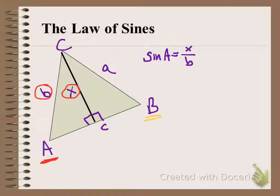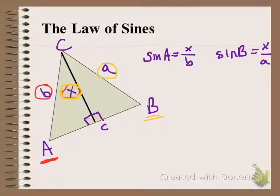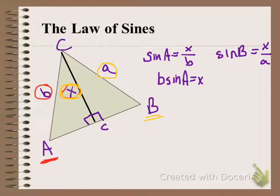Now let's go to the other angle. The sine of B is equal to X over A. Because X wasn't part of the original triangle ABC, I want to eliminate it. If I solve the left equation for X, I multiply both sides by B and get B times sine of A equals X. Solving the right equation for X gives A times sine of B equals X.